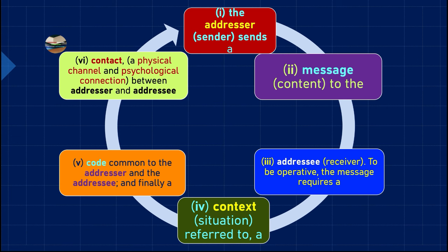Not only is the physical channel important, but also the psychological connection. For example, if I am talking to you but psychologically you are not present or attentive, the communication cannot be successful. If I keep speaking and psychologically you are lost elsewhere, there is no psychological connection between what I am saying and what you are receiving. We need both a physical channel — whether in person or through radio, television, or mobile — and a psychological connection between the addresser and the addressee.